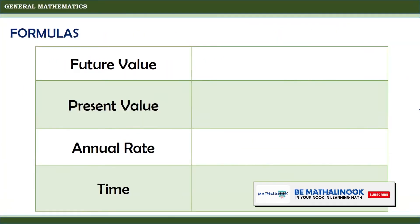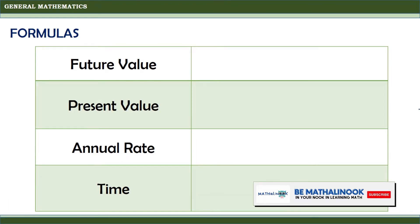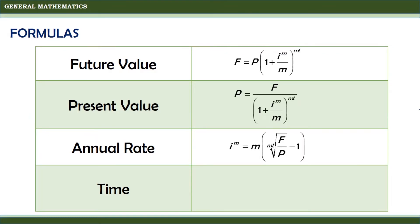From the previous video, we have learned the formulas for the future value, present value, annual rate, and time. The formula for the future value is F equals P times the quantity 1 plus i_m divided by m, raised to mt. For the present value, we have F divided by 1 plus i_m over m raised to mt. For the annual rate, we have i_m equals m times the mt-th root of F divided by P, minus 1. And finally, for the time, we have the logarithm of F divided by P to the base 1 plus i_m divided by m, all over m.